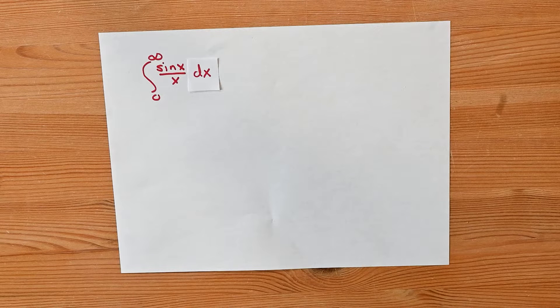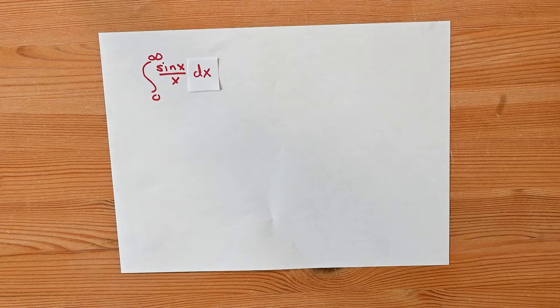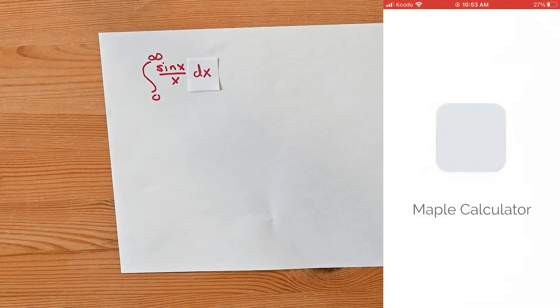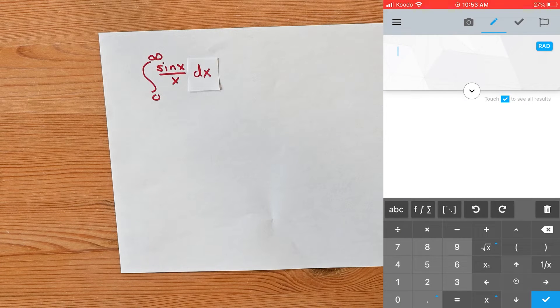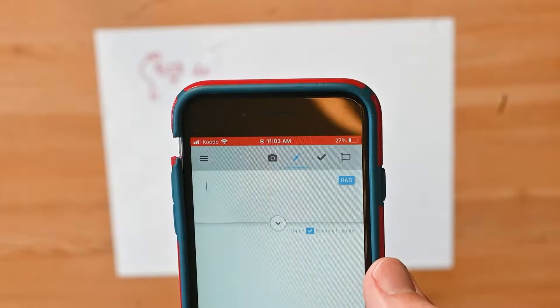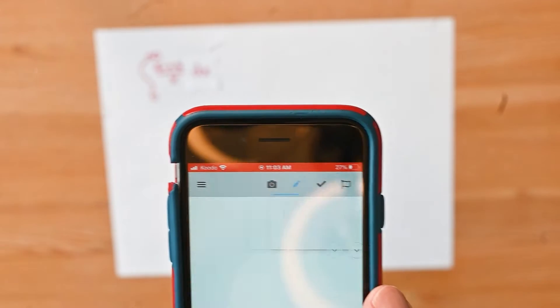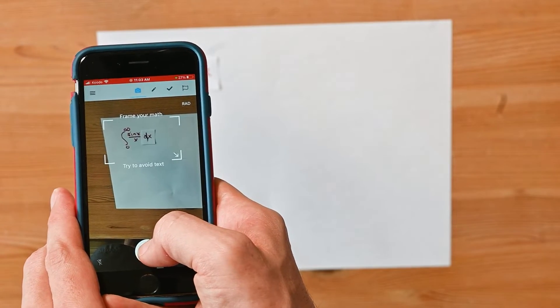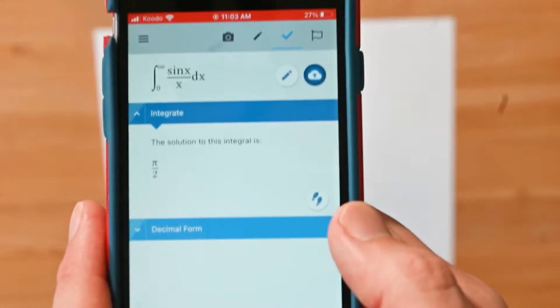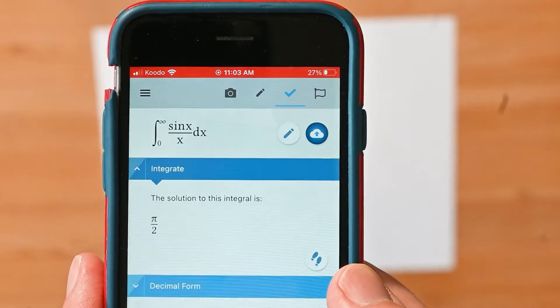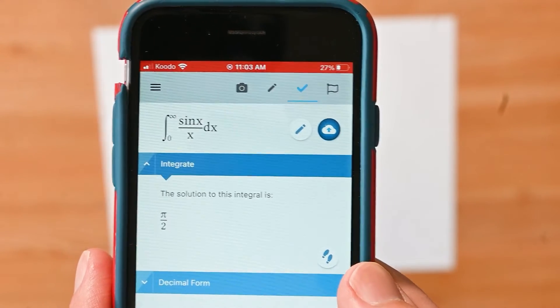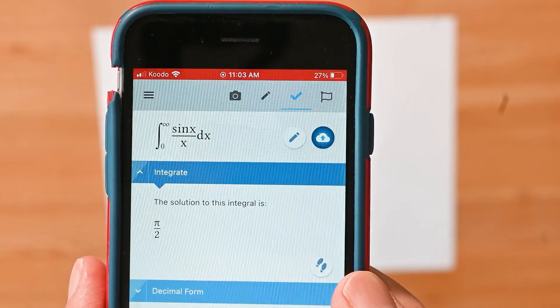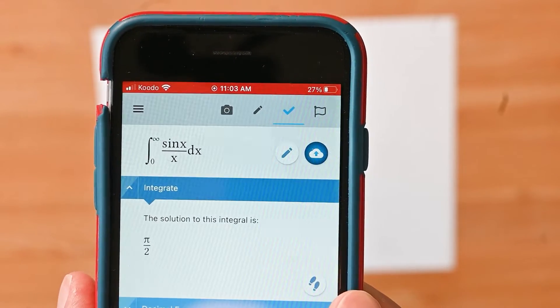One thing that we can do is turn to Maple Calculator. Maple Calculator is the sponsor for this video and makes a wonderful calculator app that you can use on your phone. The links to that are down in the description. The idea is this: I'm going to come and click the camera button here, and I can hover over the math that I've handwritten down. I swipe it, and what it gives is the value of pi divided by 2. That is, Maple Calculator knows how to interpret integrals and figure out what the actual value of them is.